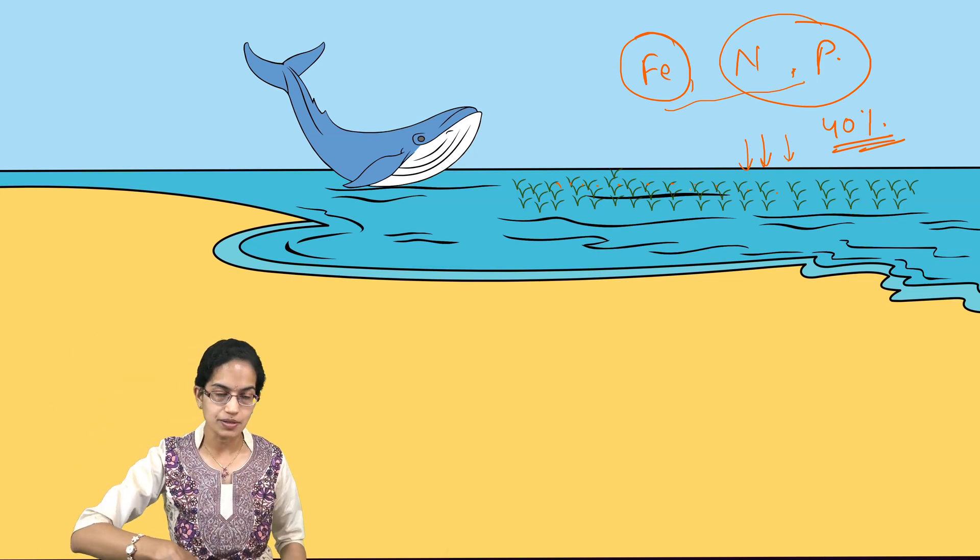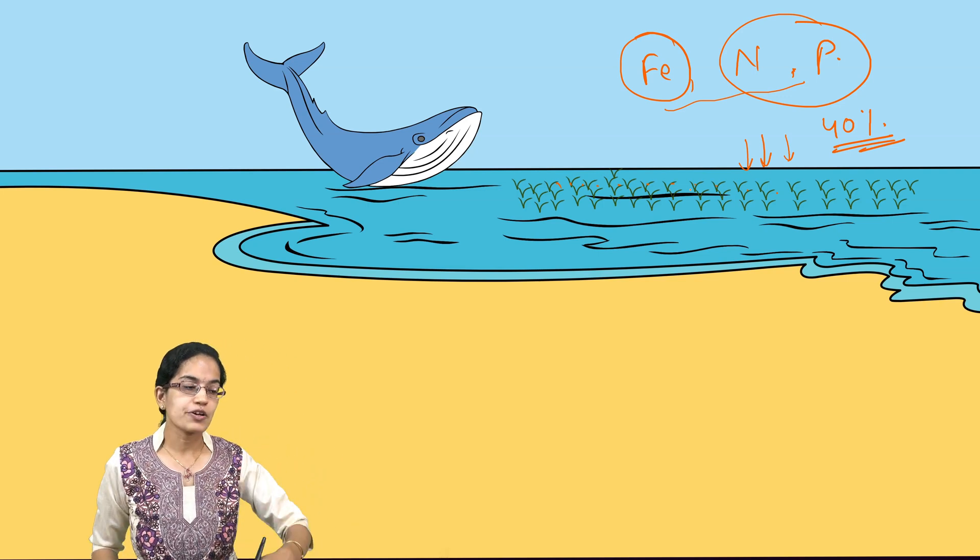The more iron, nitrogen, and phosphorus is present, you would have better growth of planktons. More growth of planktons would lead to more absorption of carbon because planktons are an important source of carbon dioxide absorption and they contribute to nearly half of the atmospheric oxygen. So, a significant role is being played by whales.